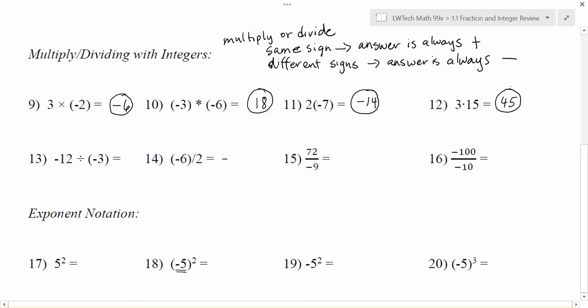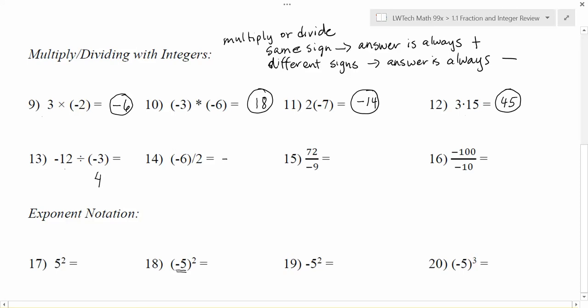The rules for division are exactly the same, so it keeps things easier. All we do — same deal — this time we're going to divide the two numbers. 12 divided by 3 gives me 4, and then go back and check the sign of your answer. Negative divided by a negative — same signs — so my answer ends up being positive, and positive 4 is my solution.